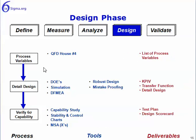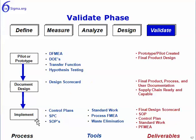In the Design phase, we want to design the process variables that will be used for the new design — remembering this is a new design methodology. We want to provide the detail design and then demonstrate or verify Six Sigma capability. And then in the Validate stage, we want to pilot a prototype, document it, and then implement it.